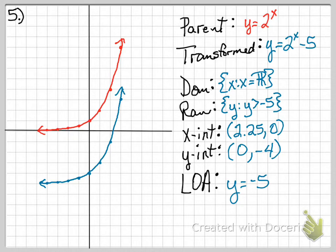Because I shifted down, you can now see that we do have an x-intercept. So, my x-intercept is at 2.25, 0. My y-intercept is at 0, negative 4. And my line of asymptote is at y equals negative 5.